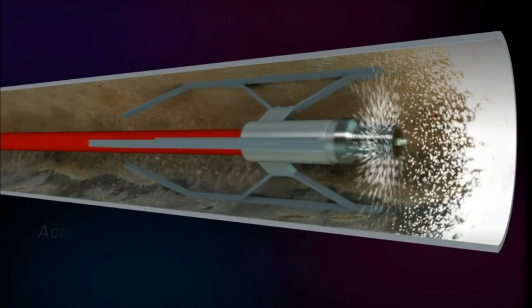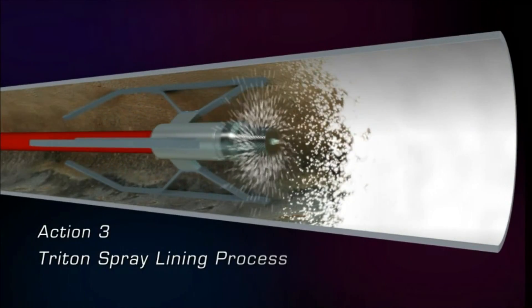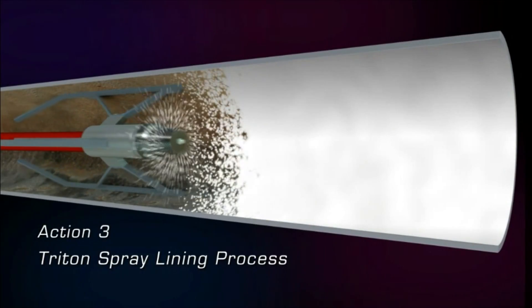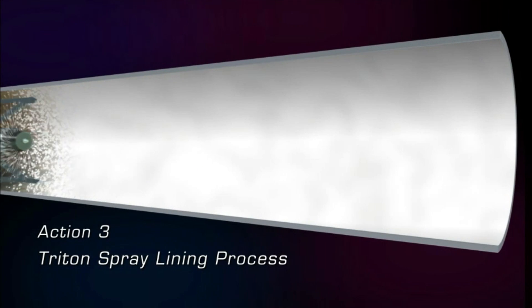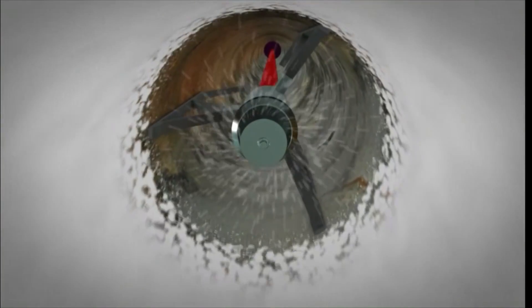As the hose is winched backwards through the pipe, the lining material is centrifugally spin-casted onto the interior pipe wall through the rotating spray head comb. Computerized metering and monitoring equipment on the lining rig precisely control the thickness of the applied lining material.